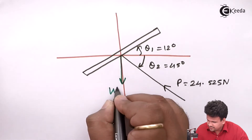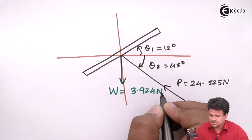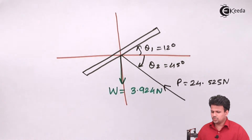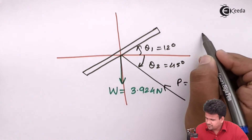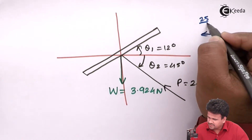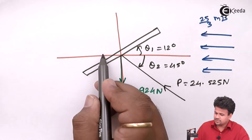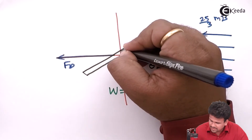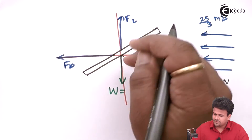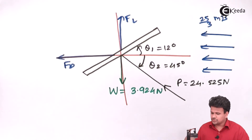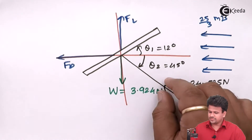Along with the applied force, there is the weight of the kite, 3.924 Newtons, acting downwards. We have to calculate the drag force and lift force. The wind velocity acts in the horizontal direction, approximately 25 by 3 meters per second. The drag force acts in the direction of wind velocity, and perpendicular to that there will be a lift force F_L acting upwards. The drag and lift directions can vary depending upon the force being applied.